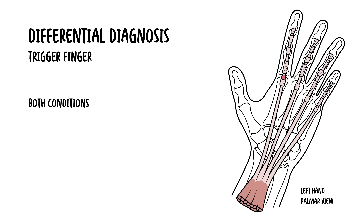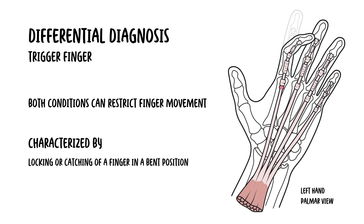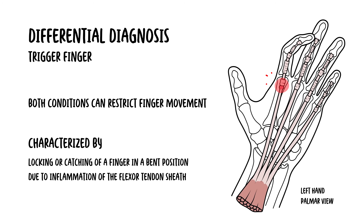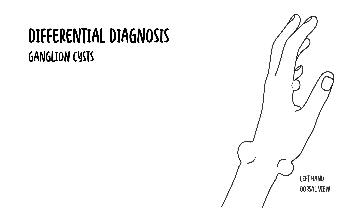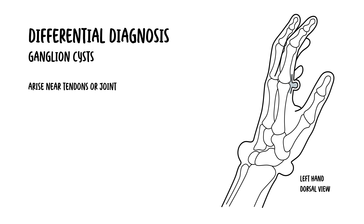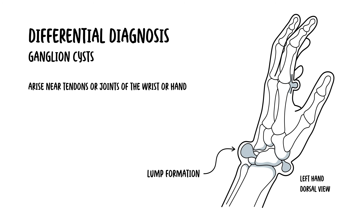There are other differential diagnoses to consider. Trigger finger also involves the hand and can restrict finger movement; however, it is characterised by locking or catching of a finger in a bent position due to inflammation of the flexor tendon sheath. A ganglion cyst is another differential, arising near tendons or joints of the wrist or hands, potentially causing a lump-like structure similar to the nodules of Dupuytren's contracture. However, these lumps are fluid-filled cysts, whereas Dupuytren's nodules are solid fibrous tissue.